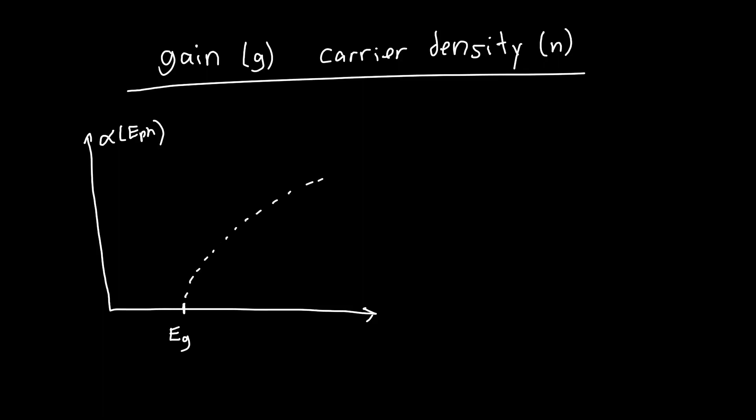And then above the band gap, let's initially assume that this is at zero Kelvin so we don't have to worry about any broadening. And let's draw this line corresponds to our carrier density is less than our transparency carrier density, so we don't have to worry about the Fermi inversion factor.